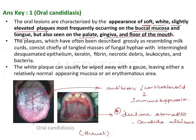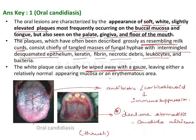The plaques described are milk-like or curd-like, consisting chiefly of a tangled mass of fungal hyphae with intermingled desquamated epithelium, keratin, fibrin, necrotic debris, leukocytes, and bacteria. The white plaque can usually be wiped away with a gauze — this is important because candida is scrapable while other lesions are non-scrapable — leaving a relatively normal appearing mucosa or an erythematous area. The given image is therefore suggestive of oral candidiasis.